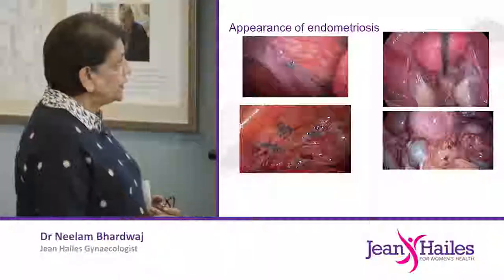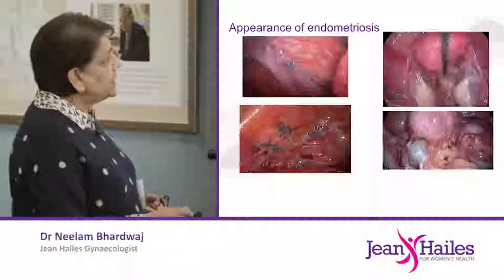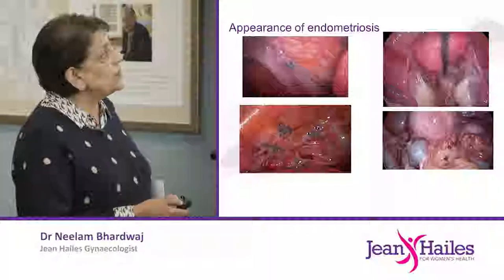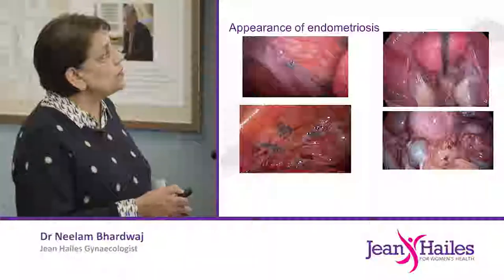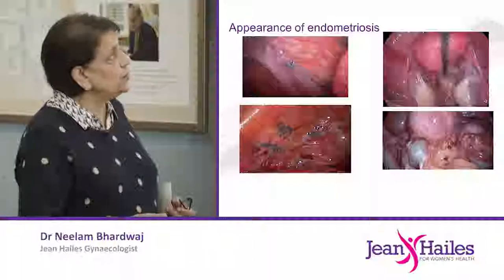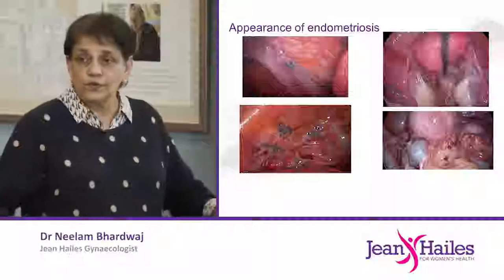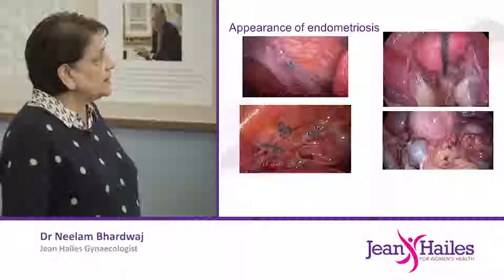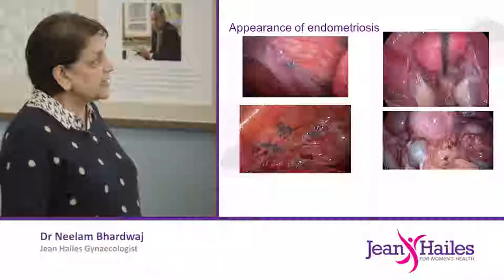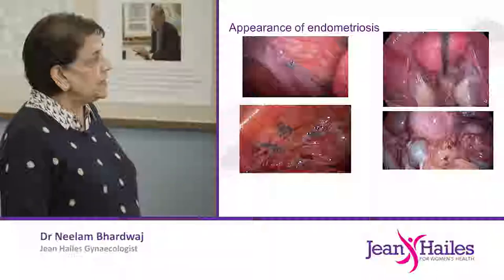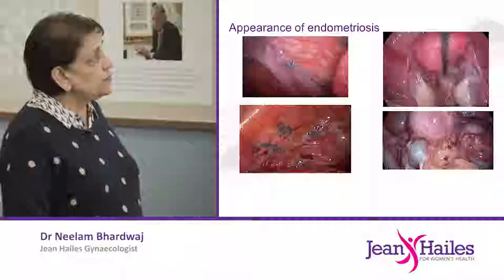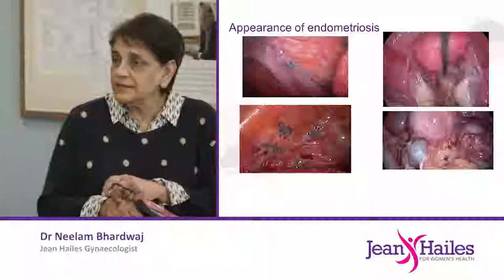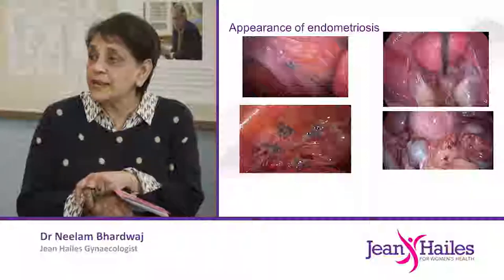I put this up to show you what a normal uterus looks like — that is certainly not a normal looking uterus. These are nice, beautiful, free-hanging ovaries. But look at this one: you can see adhesions, it's stuck here, stuck to the back of the uterus. The pouch of Douglas, which should normally be open, is all stuck. You can't put anything past that.